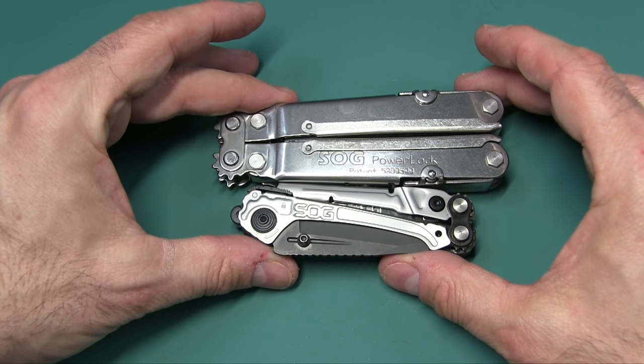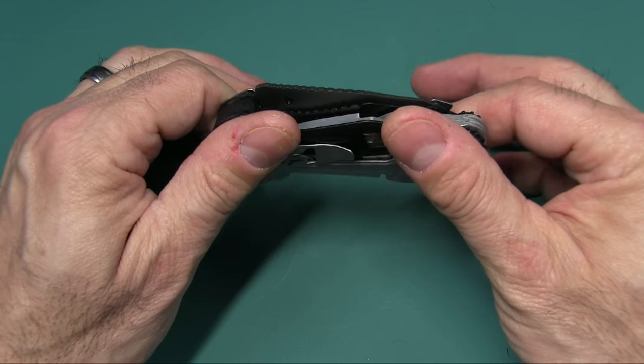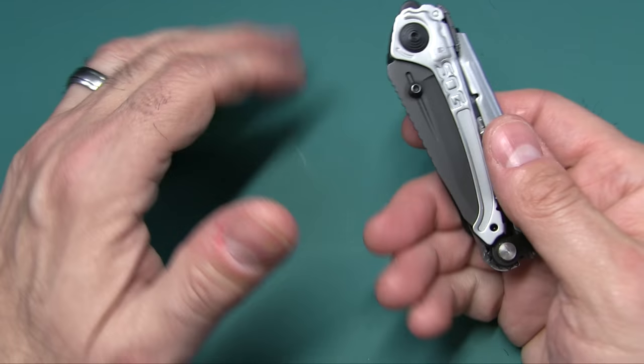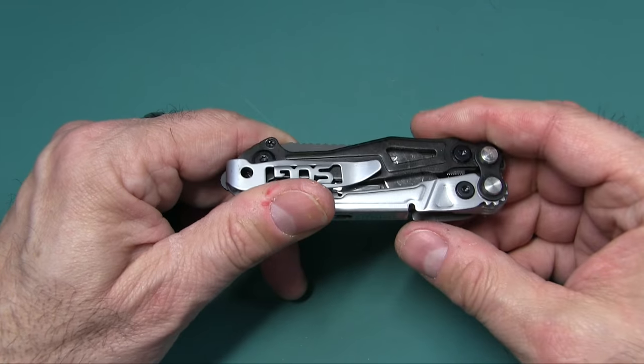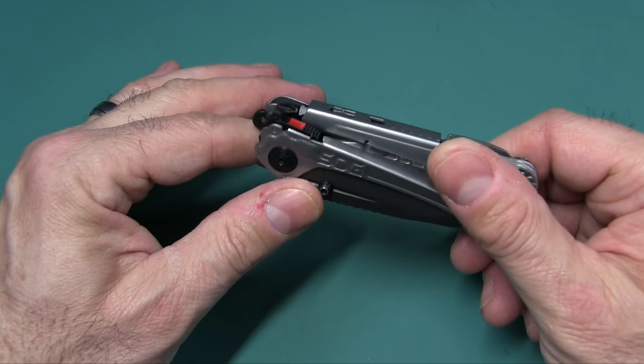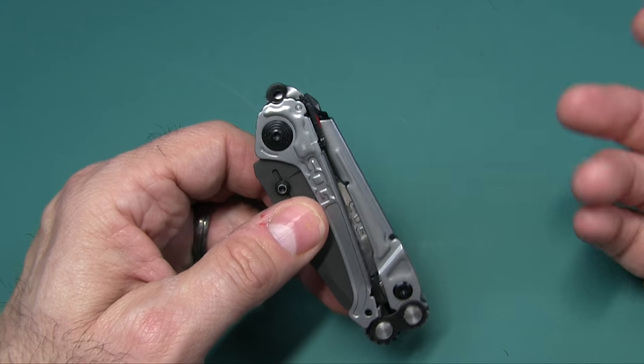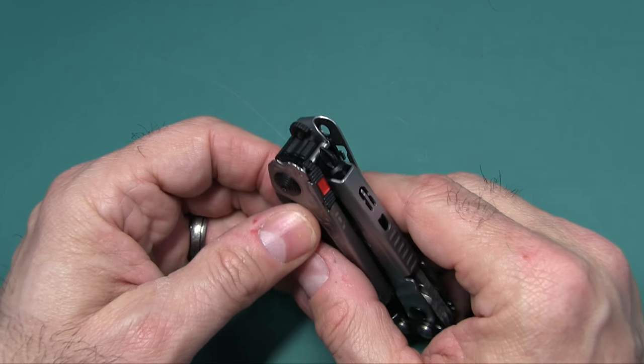Here is the SOG PowerLock just to show you that. So you can see that it is very small. I noticed that in a lot of comments people give this a down review because it comes smaller than they thought it was. Anyway, this has 10 tools. Now you know how that goes. They count every little speck of dirt on it as a tool.